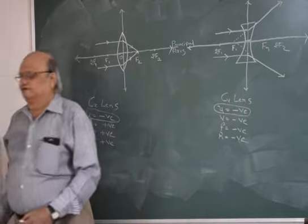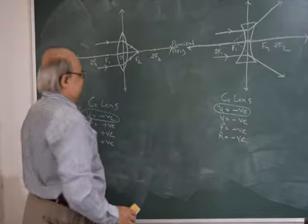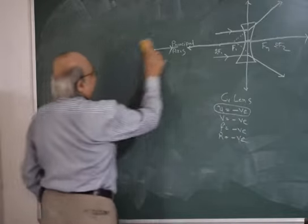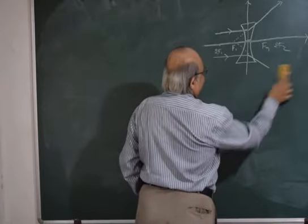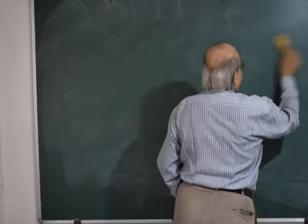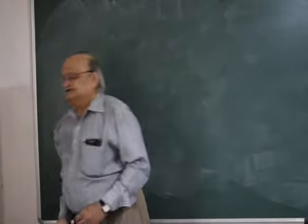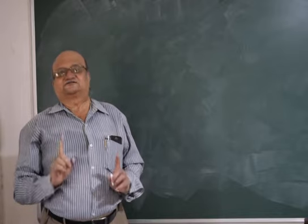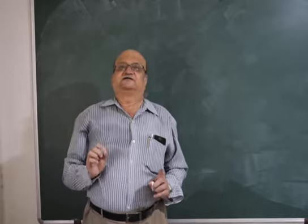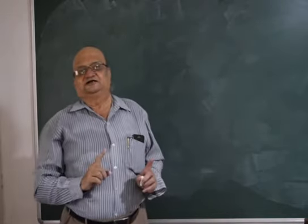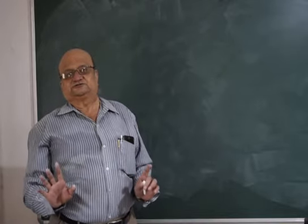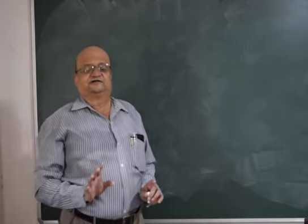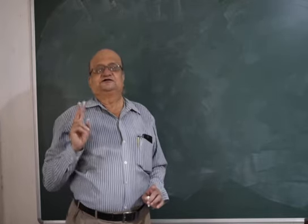Now we go for drawing ray diagrams. You already have the table for the concave mirror — the same table is applicable for the convex lens. Remember: the concave mirror table and the convex lens table are the same. The only change you have to make is to replace C with 2F — that is the only change; all other things remain the same. While drawing the ray diagram, we will require three rays: two are compulsory and for the third we have three options.